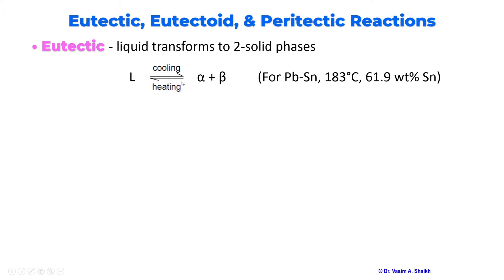These reactions — eutectic, eutectoid, and peritectic — are all invariant, meaning they happen at a particular temperature and at a particular composition. In the lead-tin phase diagram, at around 183 degrees Celsius at the eutectic composition of tin, we have this eutectic reaction. In the upcoming slide we will see exactly the phase diagram and the eutectic reaction.